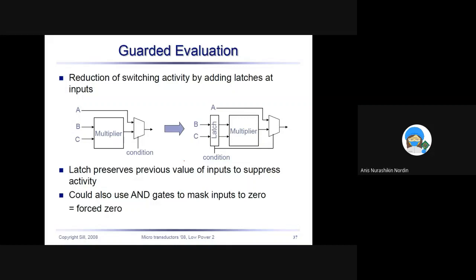Guarded evaluation: reduction of switching activity by adding latches at the input. Another method to reduce switching activity. Everything that we are doing now is we're trying to reduce switching activity. So we add latches at the input. You can see here the normal circuit is like this: you have a multiplier and then you have a comparator. In order to reduce the switching activity, you put a latch right before it goes to the multiplier. You hold the data here, you save the data here, and only when you want to multiply you switch on and move the data to the multiplier.